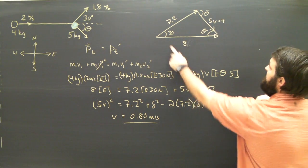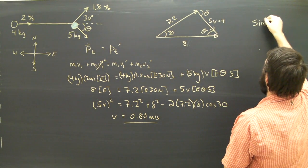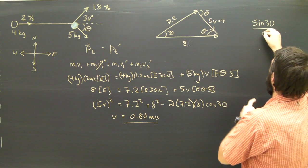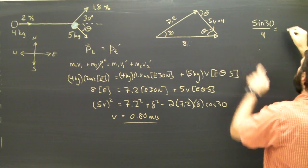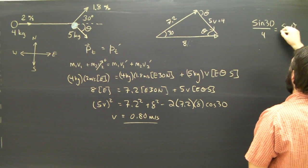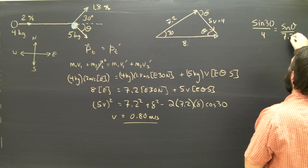Now I can use a quick sine law. I can say the sine of 30 over 4 is equal to the sine of theta over 7.2.